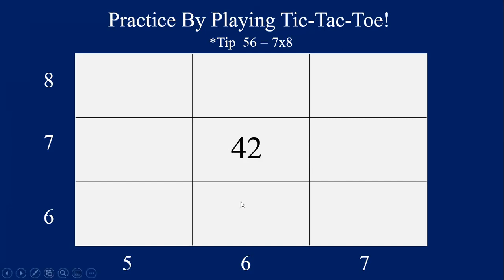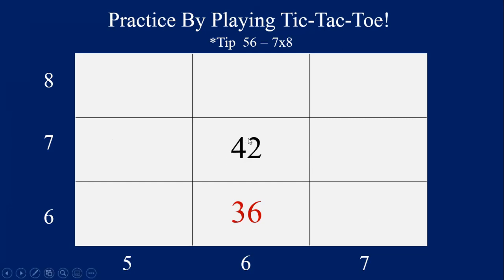Now it's my turn again. If I wanted the bottom right square, the equation is 6 times 7. You'll notice these are the same numbers as 7 times 6 that I just solved — just in a different order. Since the order doesn't matter in multiplication, the answer is the same: 42. So I write 42 in that square as well, because 6 times 7 also equals 42.